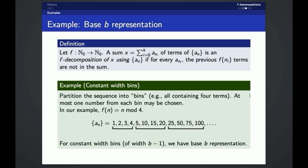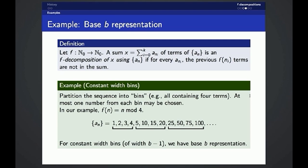And this kind of looks like base B representation because if you notice that we're only allowed to pick one number from each bin, at most one number from each bin in our decomposition, then we have sort of a 1 to 1 correspondence between these decompositions and the base 5 representation of numbers. So we can see that F decompositions are a generalization of both the Zeckendorf decomposition and base B decomposition.